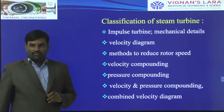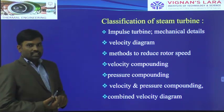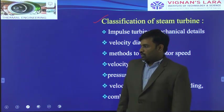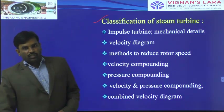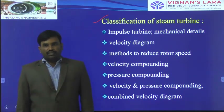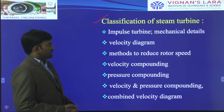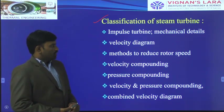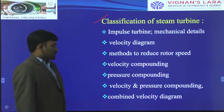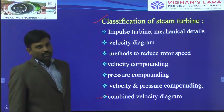Classification of steam turbines: we will discuss steam turbines in this unit. In the nozzle case, we discuss different types of nozzles, how velocity is produced, what the discharge is, how to measure discharge, and what the condition for maximum discharge is. In the case of steam turbines, we will discuss what is meant by an impulse turbine, its mechanical details, velocity diagrams, methods to reduce rotor speed — velocity compounding, pressure compounding, and combined velocity pressure compounding — and the combined velocity diagram.